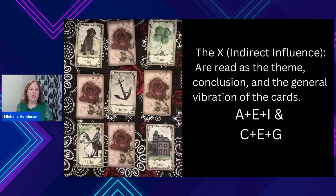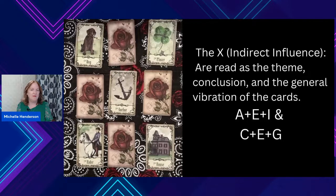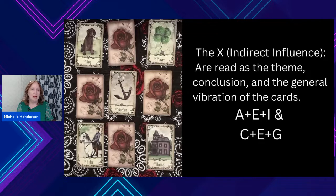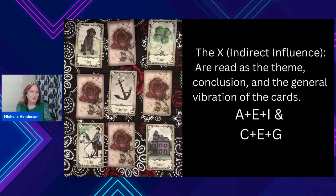The X represents indirect influences — read as a theme conclusion in the general vibration of the cards. You can always tell when it's a very positive or very negative reading depending on the cards. Going across, we have the dog, the anchor, and the house. Then we have the clover, the anchor, and the rider. You can tell the anchor is in the middle — this is the main card of the whole spread. All the other cards are surrounding it, so the anchor is the number one card we really need to emphasize.